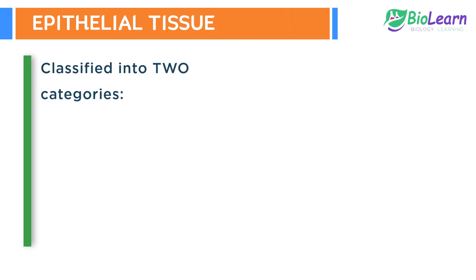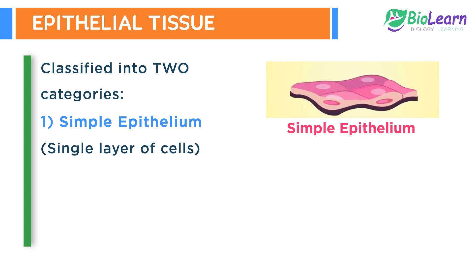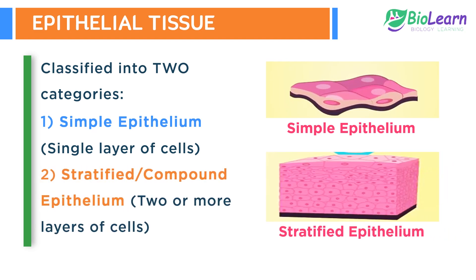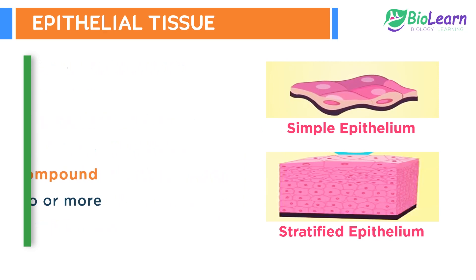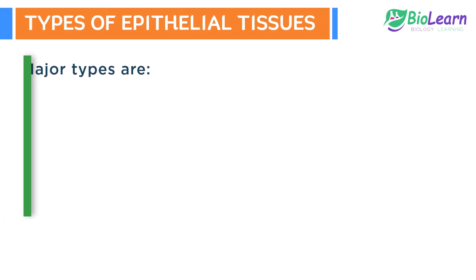The epithelial tissue can be simple epithelium, which consists of a single layer of cells, or it can be stratified or compound epithelium, which consists of two or more layers of cells. On the basis of structure and function of the cells, epithelial tissue can be of the following types.